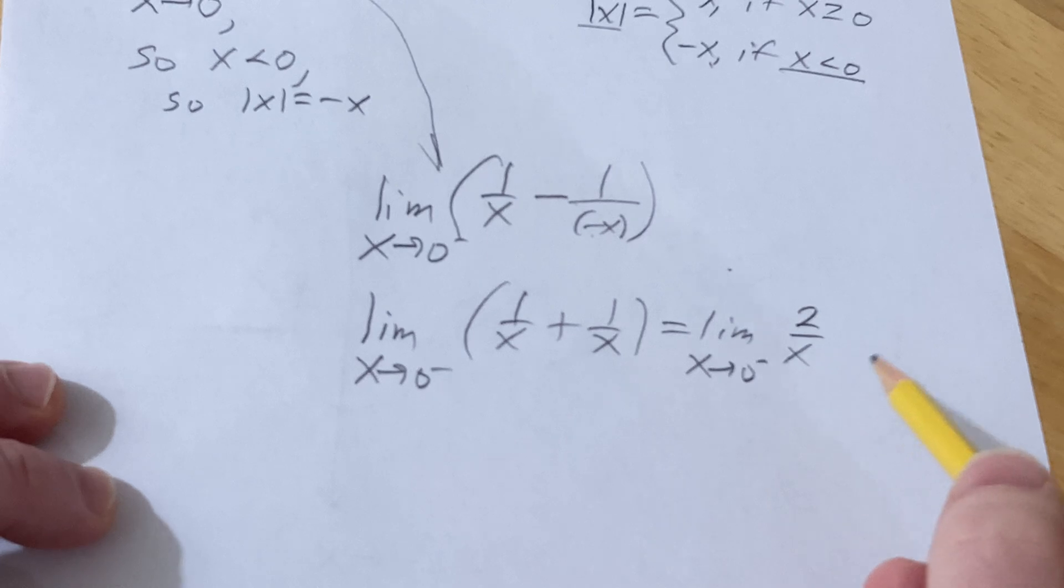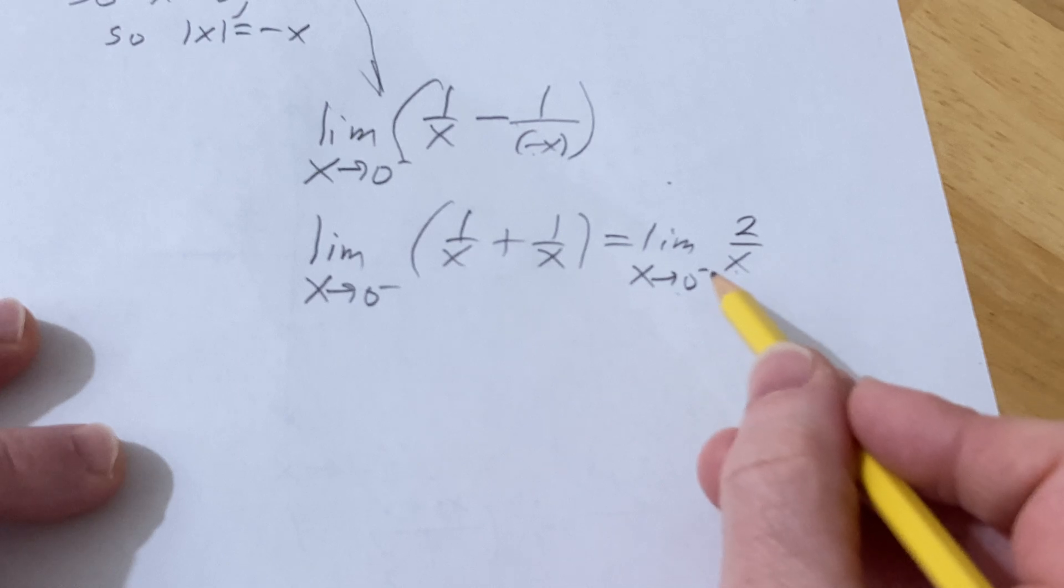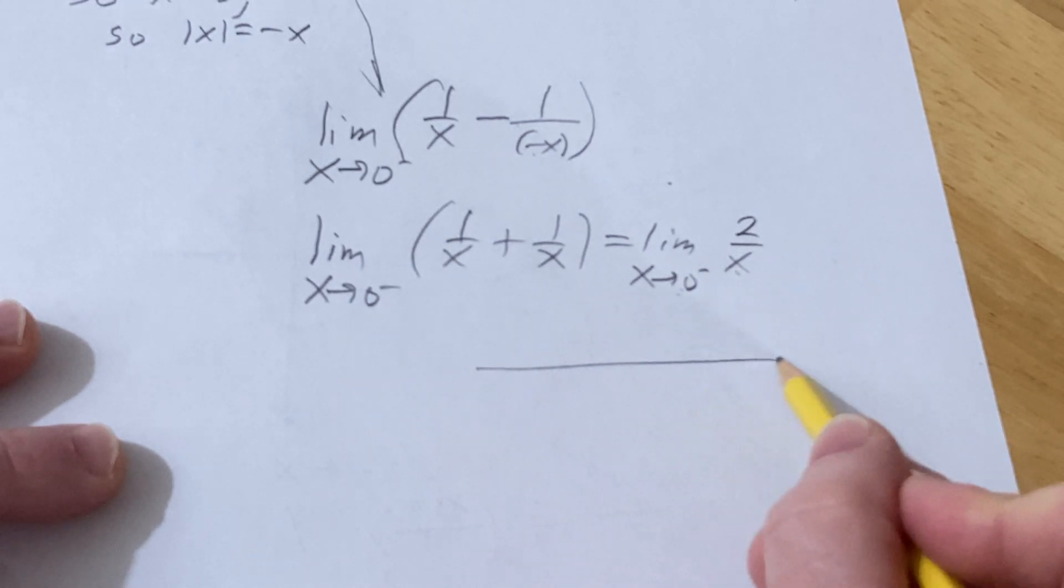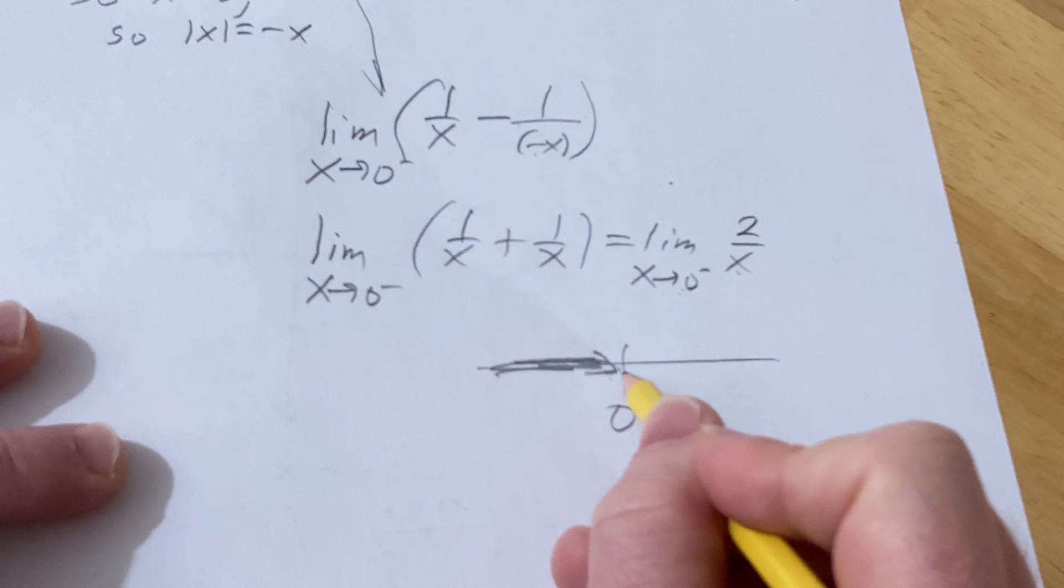So obviously this is not going to exist, so let's try to do better than that. Because if you plug in 0 it's not going to work. So x is approaching 0 from the left, so here's 0, so you're coming this way. So you're getting infinitely close to 0 from the left, so you're getting negative numbers really close to 0.